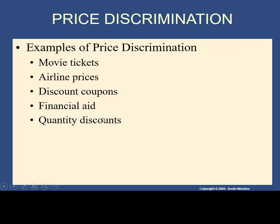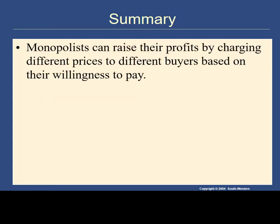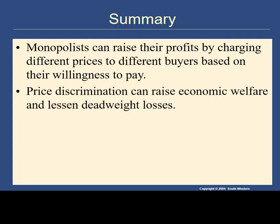You also get volume discounts and quantity discounts — if you buy a big package at Costco, you pay a different amount than someone buying the same thing in a smaller package. To summarize: monopolists can raise their profits by charging different prices to different buyers based on the buyer's willingness to pay. Price discrimination actually increases economic efficiency — it raises economic welfare and lessens deadweight loss.